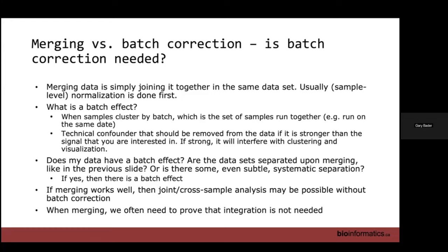If merging works well — meaning there's no batch effect — then your joint analysis probably will be fine without applying a batch correction method. Although sometimes when merging your data and applying an analysis, people will ask you to prove that integration is not needed. Because batch effects are so frequently encountered, it's a common reviewer question in publications to ask: how do you know your result is not just due to a batch effect? And you kind of have to prove that.